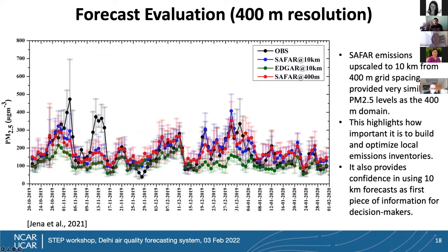For emissions, the Indian Institute of Tropical Meteorology developed an emission inventory at 400-meter resolution. We upscaled the 400-meter emissions to 10-kilometer and compared the two forecasts — we found that by upscaling, we achieved forecast accuracy comparable to the 400-meter forecast. So to provide forecasts in a timely manner, we first run the 10-km and 2-km forecasts, then downscale to 400 meters. Forecast evaluation across multiple statistical metrics showed performance was good to excellent in most cases, and it did not degrade significantly from day one to day three.